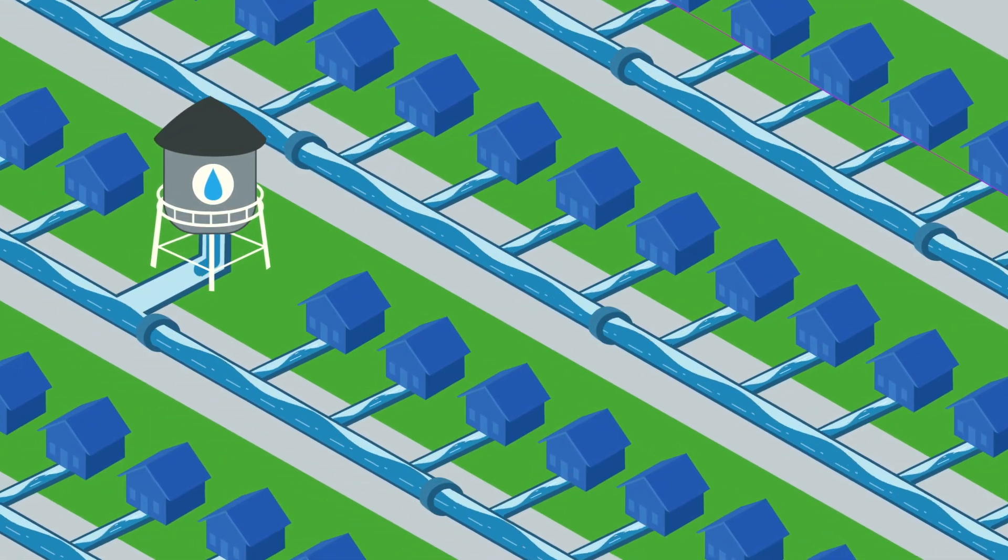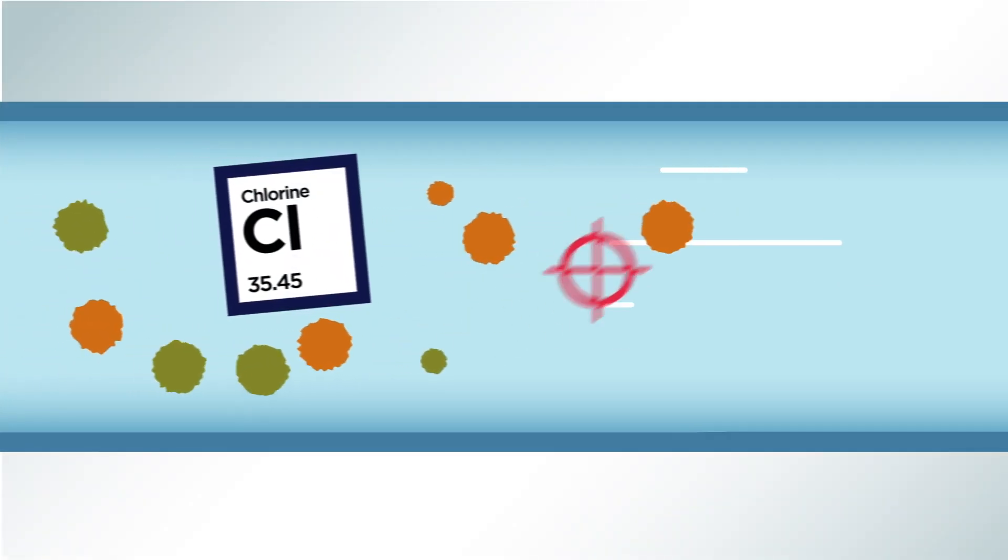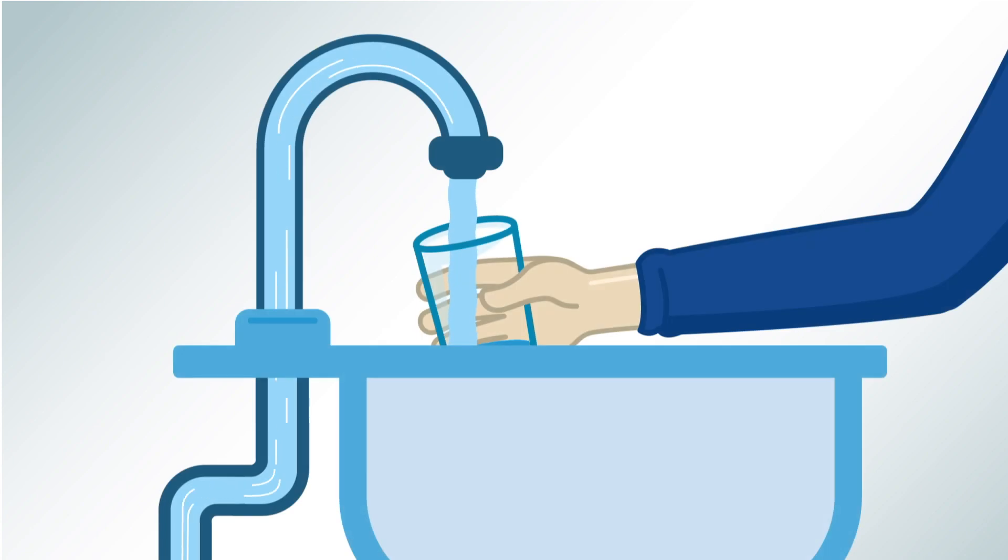We're fortunate to have quality water distributed to homes in most of America. Local utilities treat your water with safe levels of chlorine, protecting it from germs as it travels to your faucet.